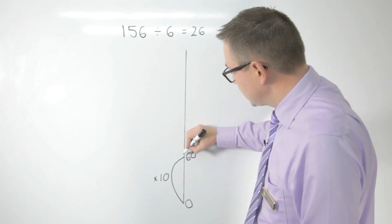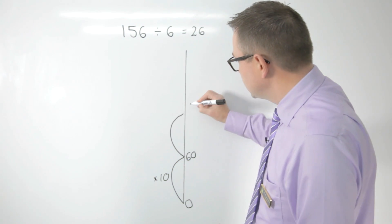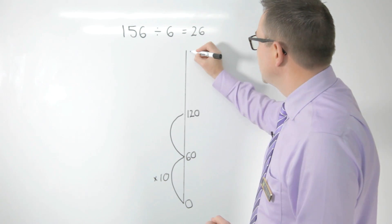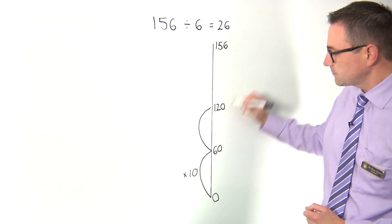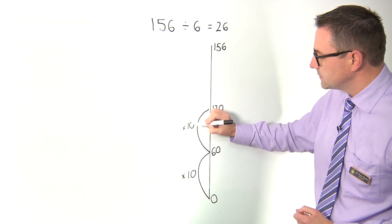I know that I can jump another 60 taking me to 120, and all the time I'm heading for that top number of 156. So this here is another 10 lots of 6.